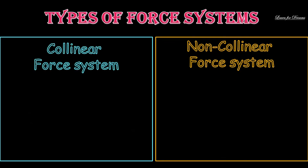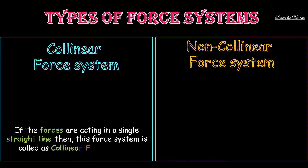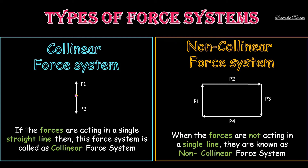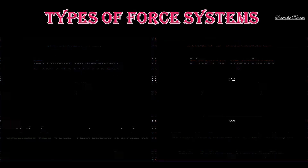The next types of force system are collinear force system and non-collinear force system. If the forces are acting in a single straight line, then this force system is called a collinear force system. Here you can observe that forces P1 and P2 are acting in a straight line. For non-collinear force system, when the forces are not acting in a single line, they are known as non-collinear force system. Here you can observe that all four forces P1, P2, P3 and P4 are not in a straight line.